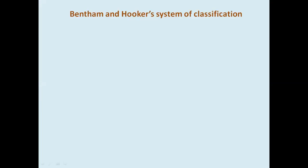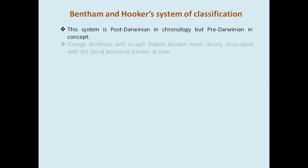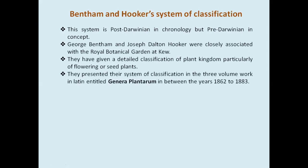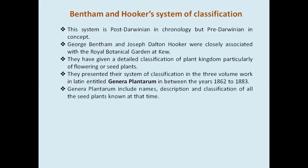Let us see the important features of Bentham and Hooker's system of classification. This system is post-Darwinian in chronology but pre-Darwinian in concept. George Bentham and Joseph Dalton Hooker were closely associated with the Royal Botanic Garden at Kew. They gave a detailed classification of the plant kingdom, particularly of flowering plants or seed plants, presented in a three-volume work in Latin entitled Genera Plantarum, published between 1862 and 1883. The Genera Plantarum includes name, description, and classification of all seed plants known at that time.